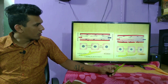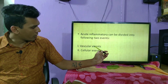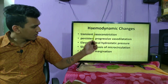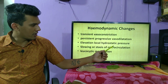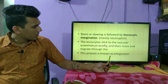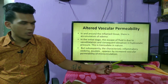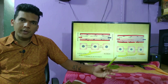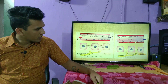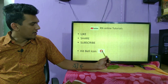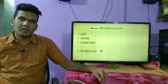So this was all about acute inflammation. Today we learned about the two events of acute inflammation — vascular and cellular events. In the vascular event we covered hemodynamic changes: vasoconstriction, vasodilatation, elevation of hydrostatic pressure, stasis, and leukocyte migration. We also covered altered vascular permeability, Starling's hypothesis, and how transudation and exudation occur. If you liked our video, please like, share, and subscribe to our channel, hit the bell icon, and leave your feedback in the comments. Thank you.